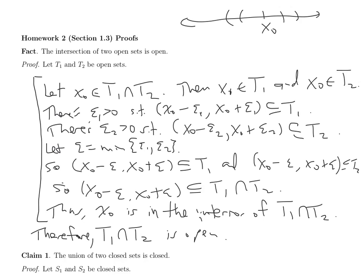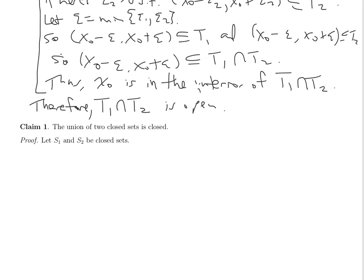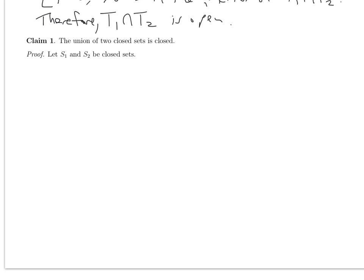Now let's see how that allows us to prove the first claim that was on the homework. Here we're trying to prove that the union of two closed sets is closed, so we'll play the same game. I am allowing any two closed sets to be chosen by the reader, and I want my conclusion to be that the union is closed. So I want to think about what proof strategy I would need. The definition of being closed is just that the complement is open.